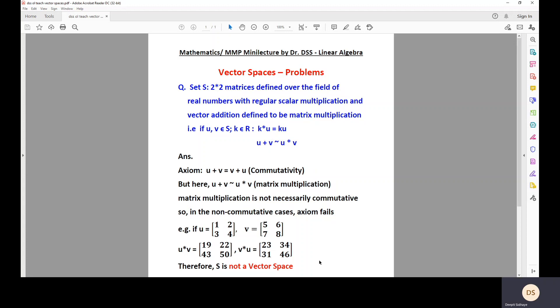Let there be a set S, which is basically a set of 2 by 2 matrices defined over the field of real numbers. Now, all of us are aware that a matrix is defined in terms of M by N order, where M is number of rows, N is number of columns, so here it's a 2 by 2 matrix.